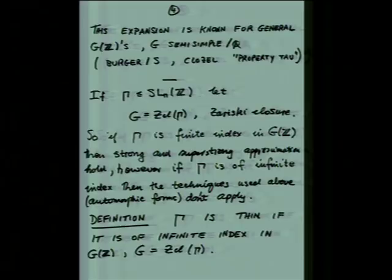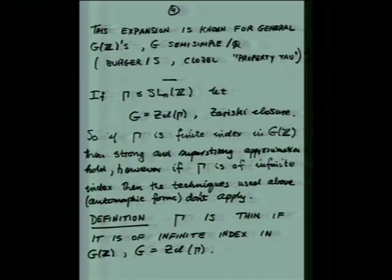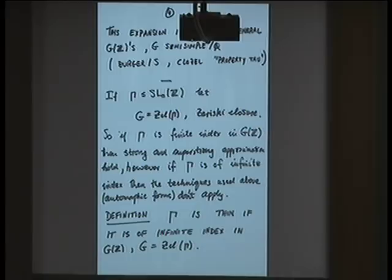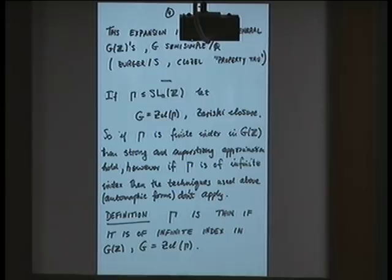So we're going to ask the same question. Suppose Γ is finite index in G — then both strong approximation and super strong approximation are easily resolved. The real interest is when Γ has infinite index, say in SL(N,Z), but is Zariski-dense in SL(N). Is it still true that you have strong approximation, and is it still true that you have super strong approximation? I'll say Γ is thin — that's the title of this lecture — if it's infinite index in its natural Z-points.